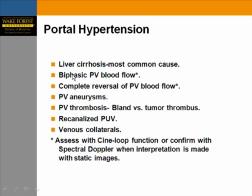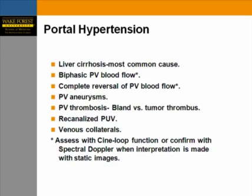When evaluating portal hypertension, look at the pattern of blood flow in the portal vein — check if it's biphasic or reversed. Check for portal venous aneurysms and thrombosis. Distinguish bland thrombus from tumor thrombus. Look for signs of portal hypertension like re-canalized periumbilical vein and venous collaterals. Confirm findings using a cine loop function or spectral Doppler rather than static images alone.